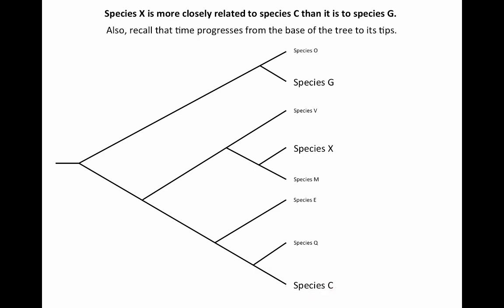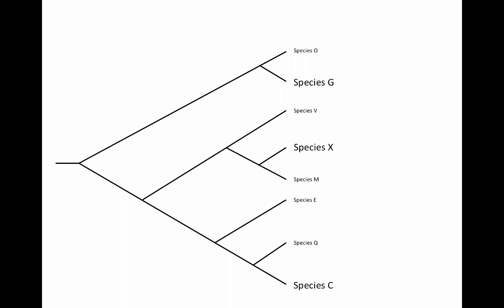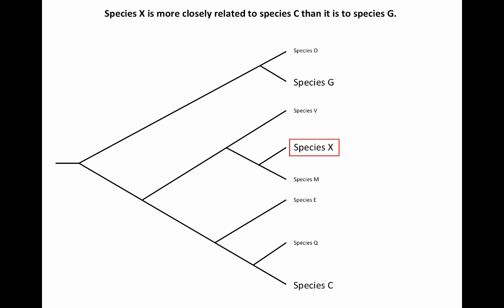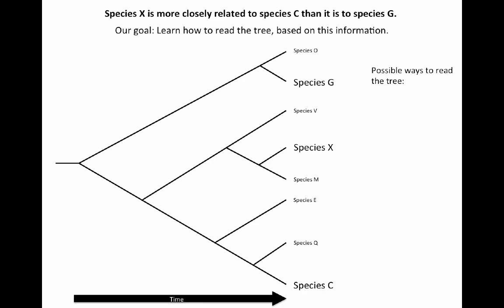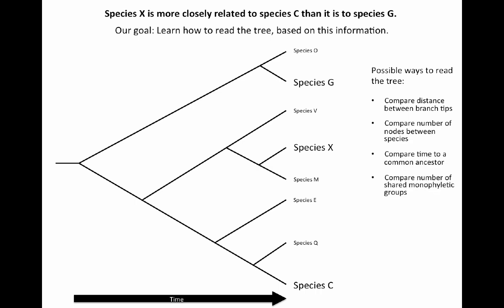It's also important to remember that time progresses from the base of the tree to its tips — in this case, from left to right. So let's review our goal: our instructor told us that species X is more closely related to species C than it is to species G, and we're supposed to learn how to read the evolutionary tree. We can compare the distance between branch tips, compare the number of nodes between species, compare the time to common ancestors, or compare the number of shared monophyletic groups.